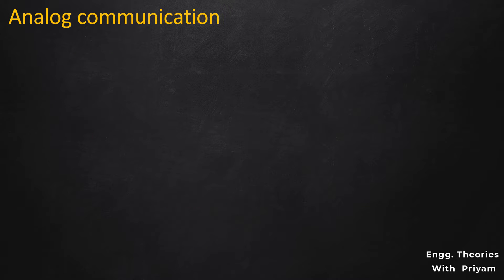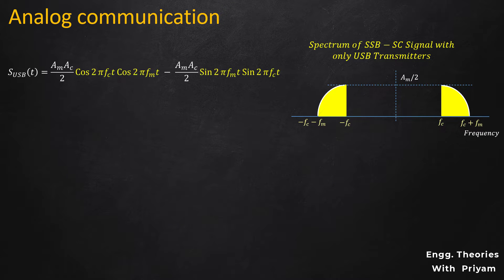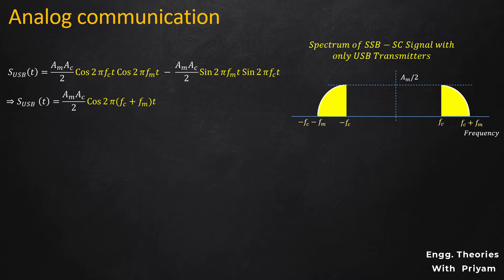Graphically, the upper sideband SSBSC modulated signal can be shown. The equation of the upper sideband SSBSC modulated signal is: s(t) = (Am × Ac / 2) × cos(2π·fc·t) × cos(2π·fm·t) − (Am × Ac / 2) × sin(2π·fm·t) × sin(2π·fc·t). Taking (Am × Ac / 2) common and applying the formula cos(A+B) = cosA·cosB − sinA·sinB, the upper sideband SSBSC modulated signal equals (Am × Ac / 2) × cos(2π(fc + fm)t).